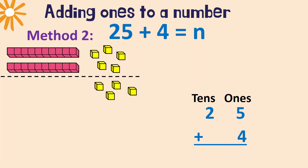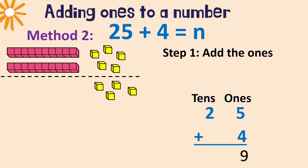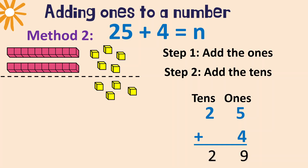The first step is to add the ones: five and four — you count the ones in the blocks, so it's nine. Next, add the tens: how many tens do you see? Two. So two plus zero is two.